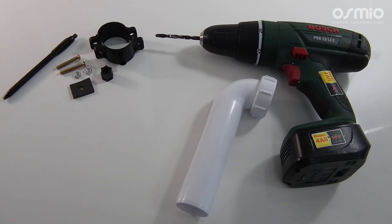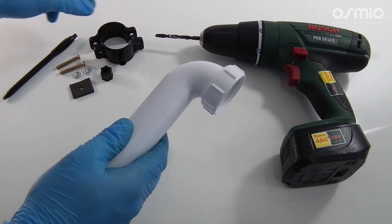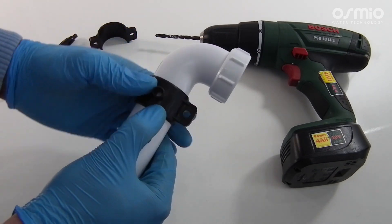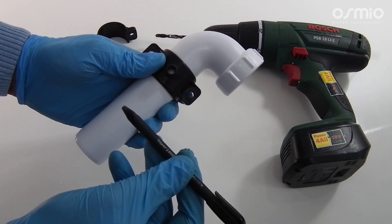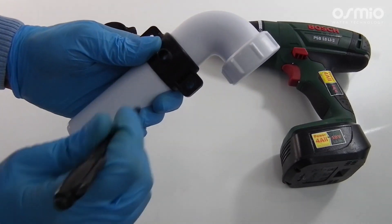To connect the system to drain, we need a drain saddle kit, marker pen, Phillips screwdriver, electric drill, and 7mm drill bit. It is important to choose the correct place for the drain saddle, as it should be above the water level on the drain U-bend.